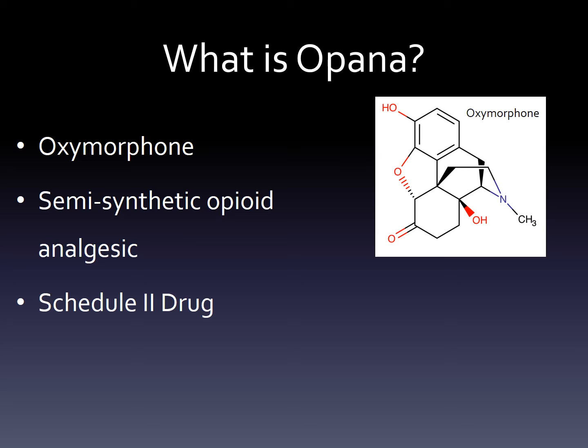Opana is considered a Schedule II drug, which means that there is a medical purpose served by the drug, but it does have a high abuse potential, which I'll be describing in a little bit. If you look at the chemical structure of oxymorphone on the top right of this slide, you may recall that this structure is really similar to that of morphine, which is derived from thebaine.